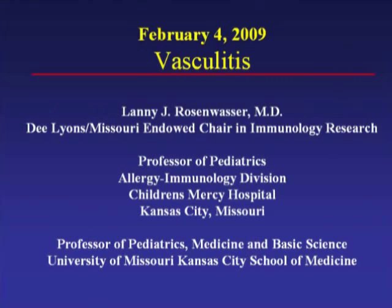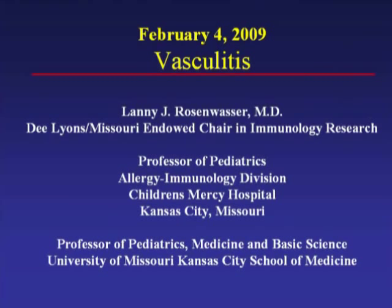Host: Has cyclosporine been used as a treatment option? Rosenwasser: There have been a few cases where it has been utilized, but no clear positives identified among the various immunomodulators tried. Cyclophosphamide has worked so well that it's hard to beat. Cyclosporine has been difficult to manage in terms of complications in these patients, and in Wegener's it's not been useful because these patients are very prone to infection.